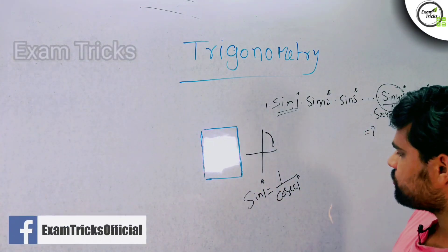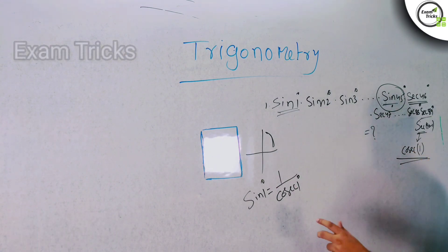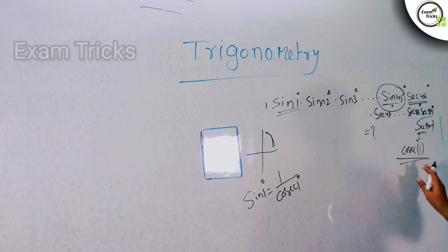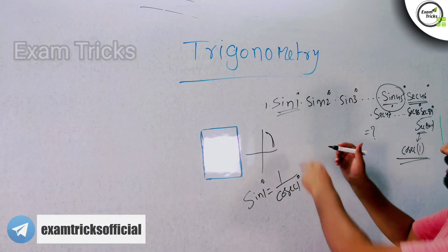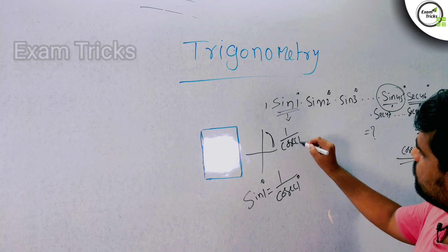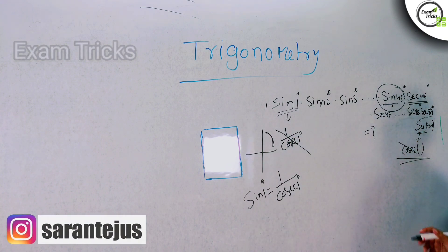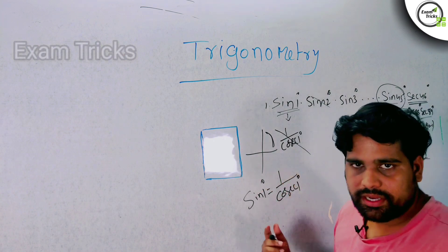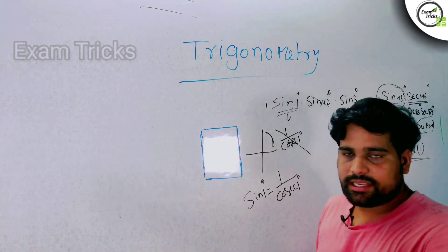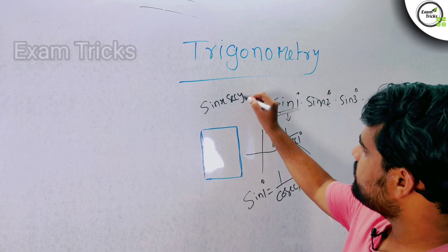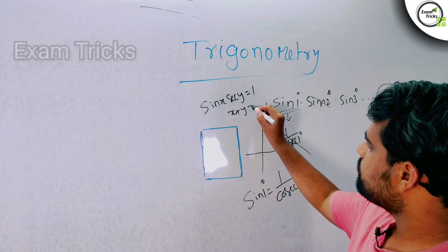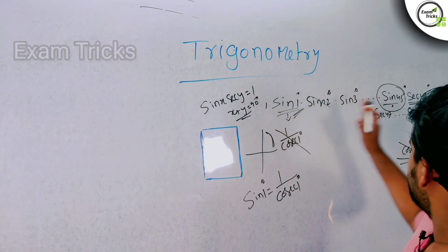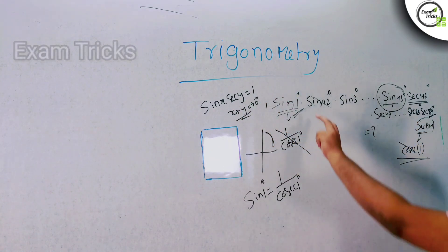The formula we use is: sin(x) × cosec(y) = 1, where x + y = 90°. Here x = 1 and y = 89, so 2x + y... sin(x) × cosec(x) = 1. This allows direct cancellation.